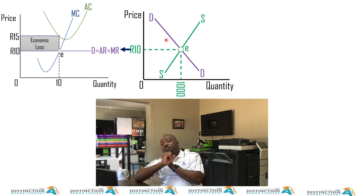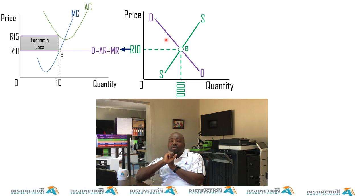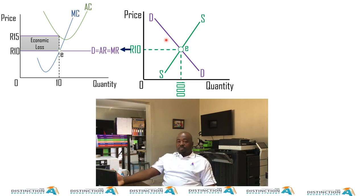Them shutting down and exiting the industry will be them applying the shutdown rule. A firm should consider shutting down if its average revenue is less than or equal to its average variable cost. Any firm in this industry that cannot cover its variable costs is going to be forced to shut down in the long run. If firms in this industry are shutting down, what do you think is going to be affected?